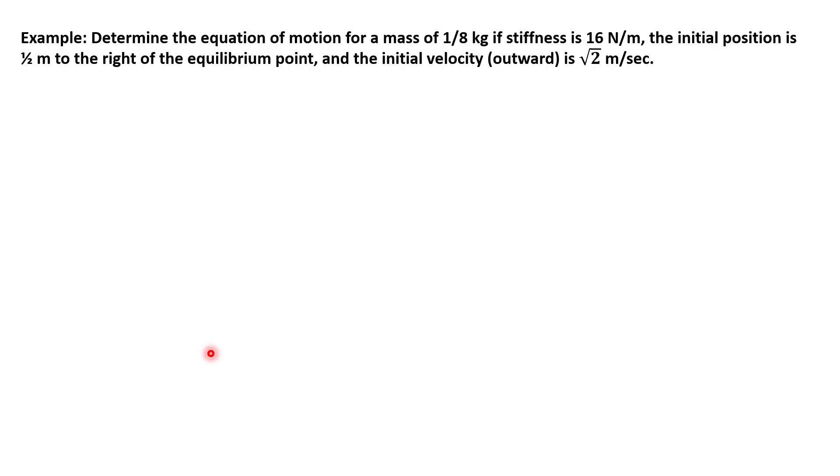So let's try out this example. We want to determine the equation of motion based on the model we were just talking about. For a mass of one-eighth of a kilogram, if the stiffness of the spring is 16 newtons per meter, the initial position is one-half meter to the right of the equilibrium point, and then the initial velocity is square root of two meters per second.